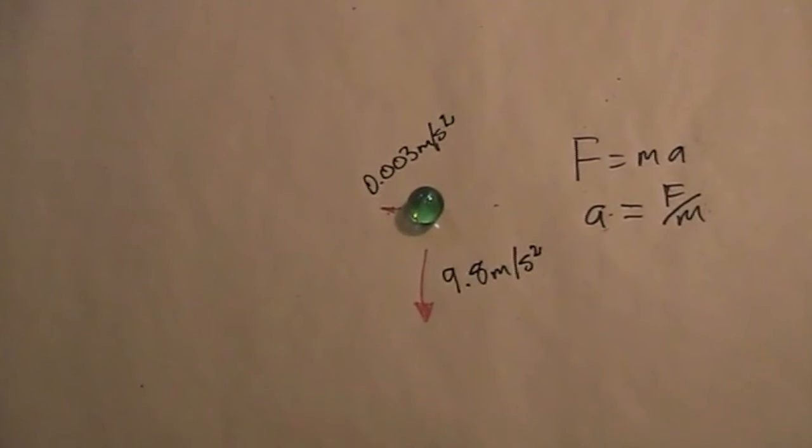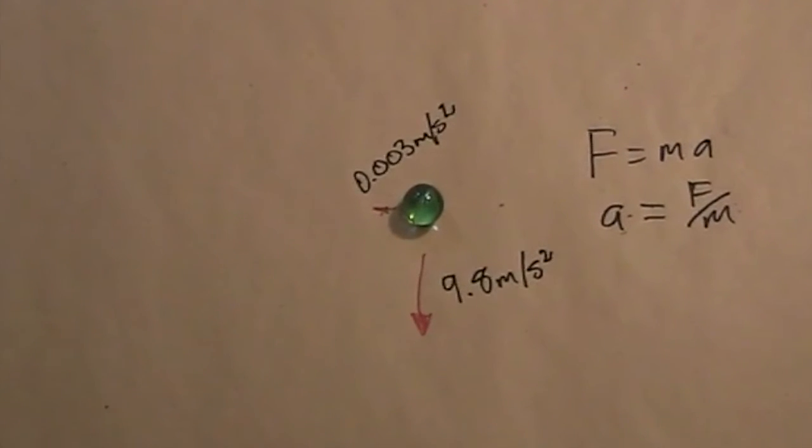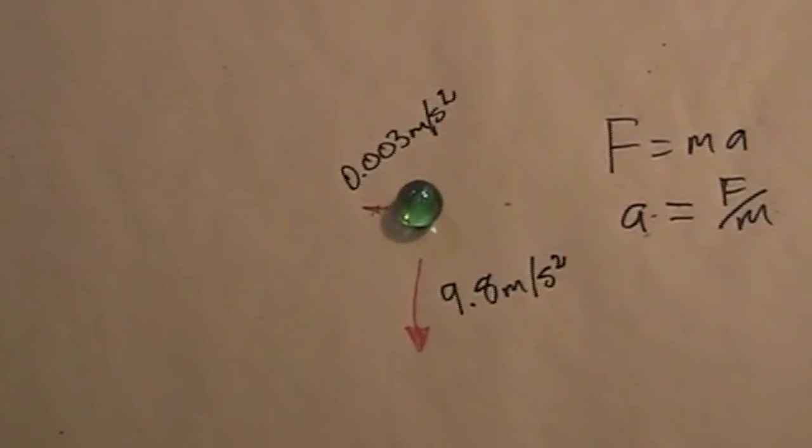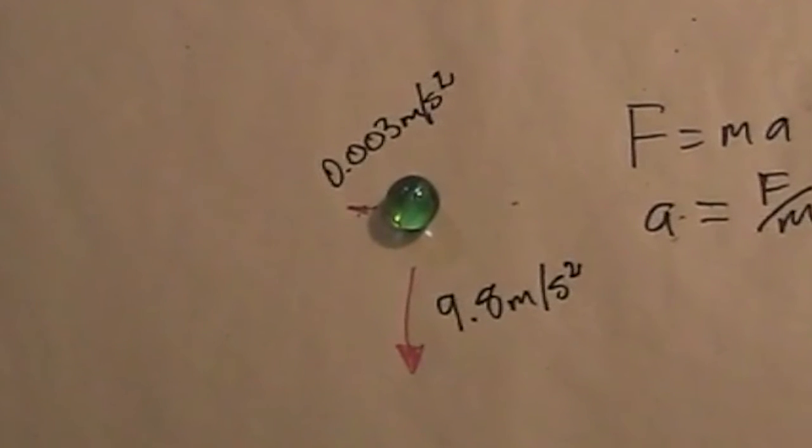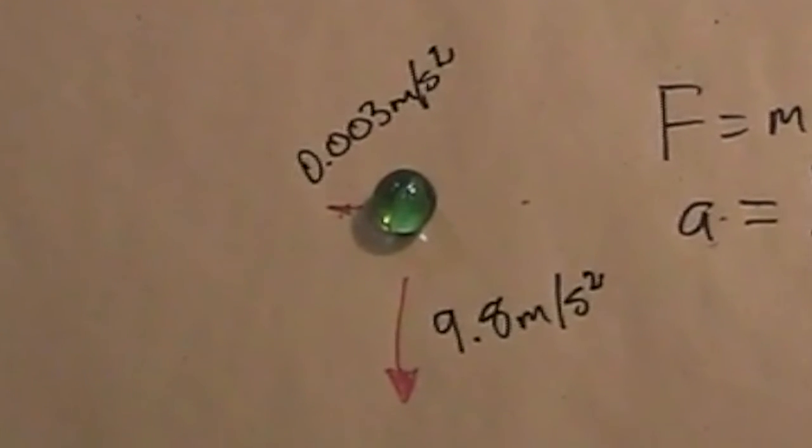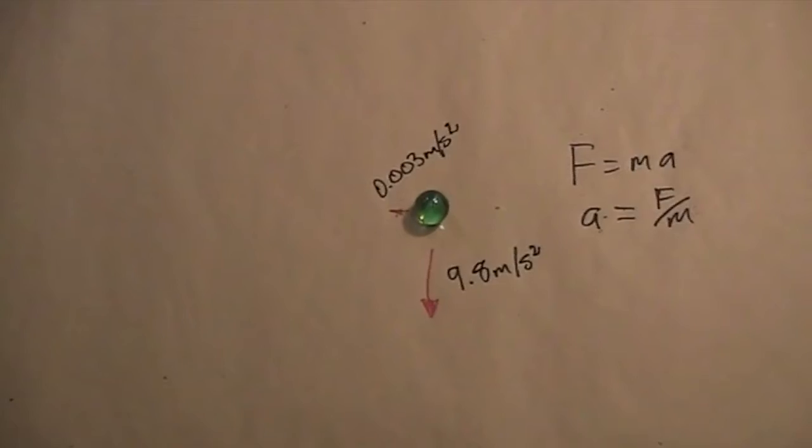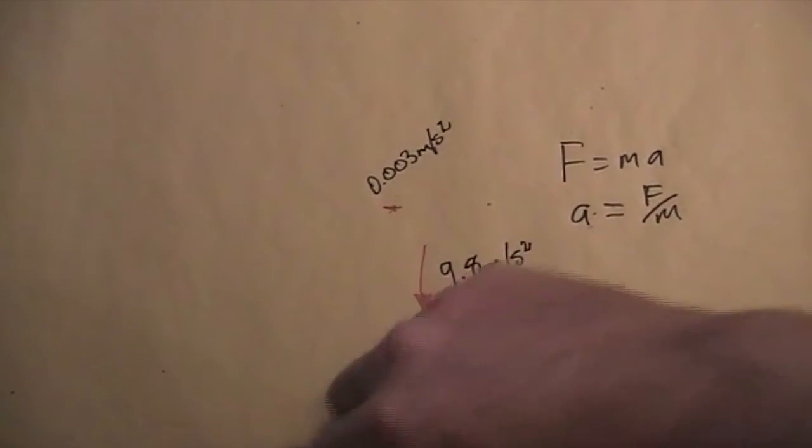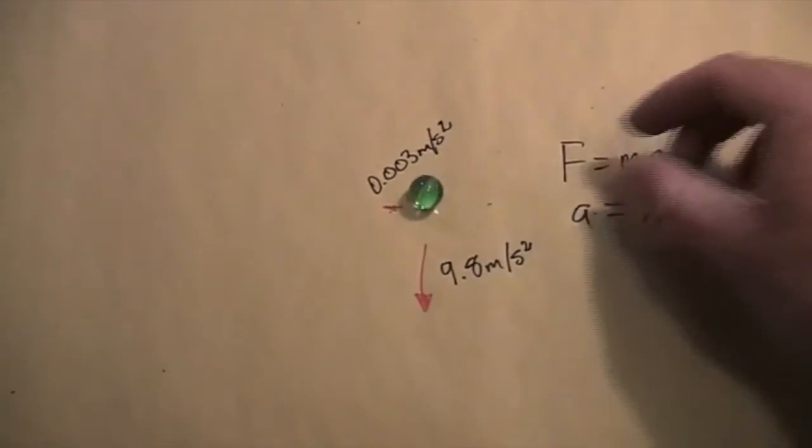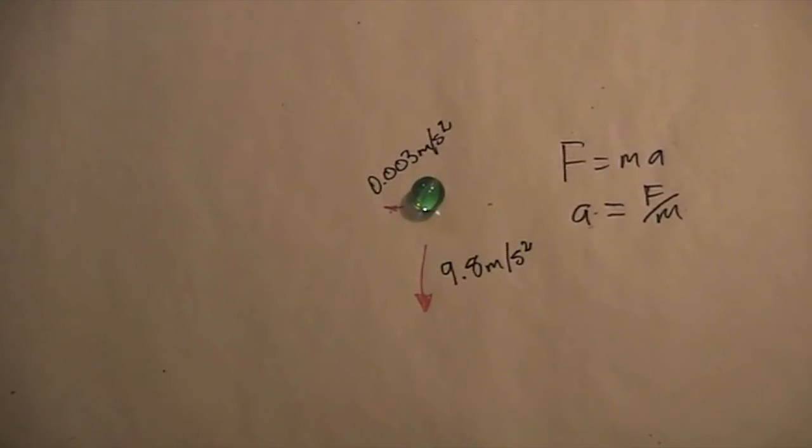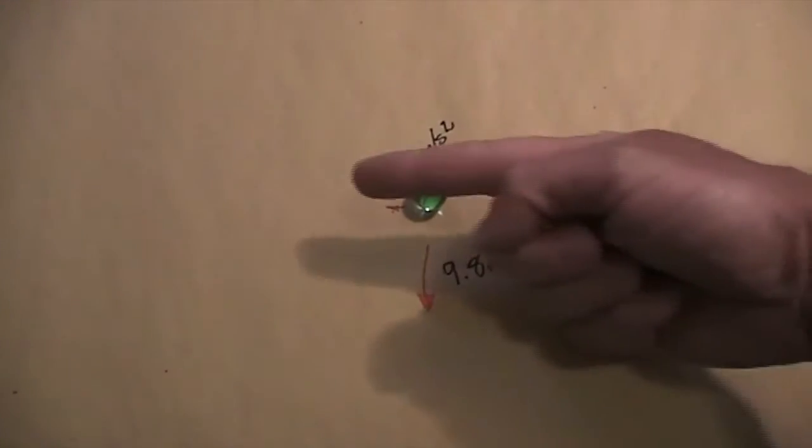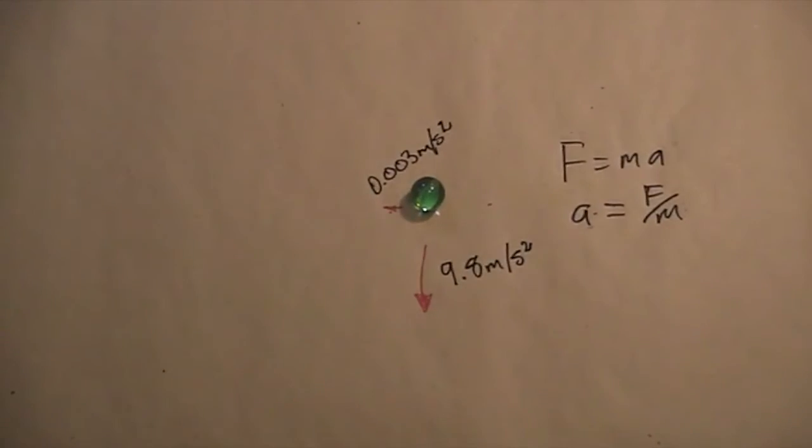However, the acceleration on the marble due to the force of gravity from the Earth is much, much greater than that between the marble and the rock. So what would you see? You would see the marble fall towards the Earth. But would you see the deflection towards the rock? Could you measure that deflection? Possibly, although it would be so very slight as to make any real accurate measurement very difficult.